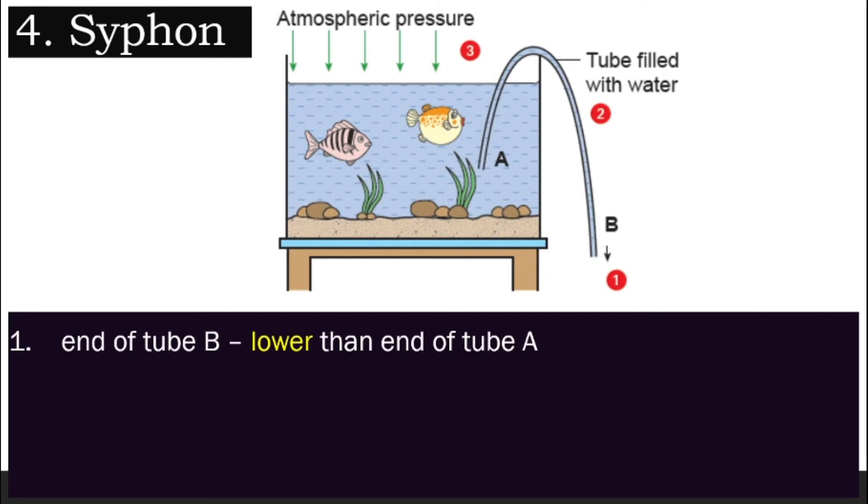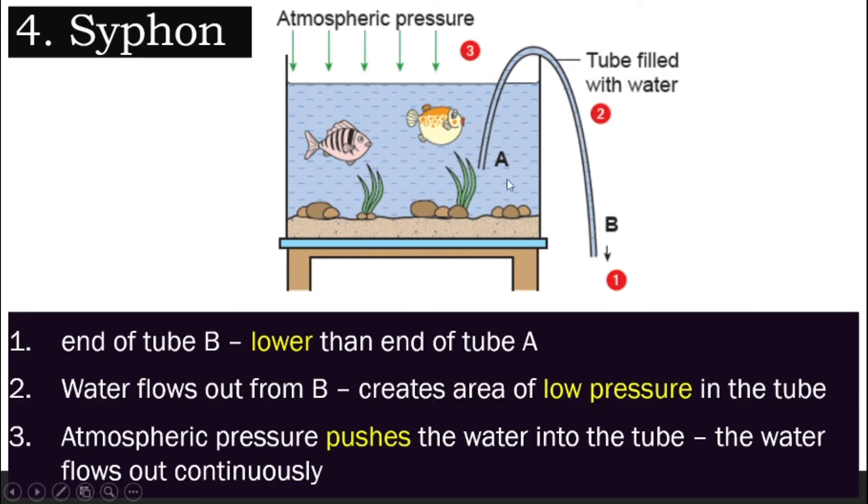Example number four, the siphon. How does this work? We get a tube, fill it with water, and what happens is you put the point B here, the end of tube B here, put it lower than A. And what happens is the water will flow out. As the water flows out from B, it creates a low pressure inside this tube. When it is low pressure, atmospheric pressure at area three here will become larger compared to the tube. Hence, it will push the water out and the water will flow out continuously.